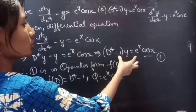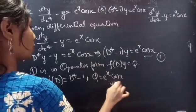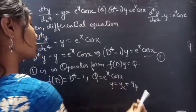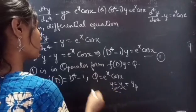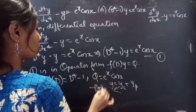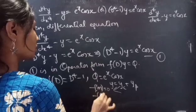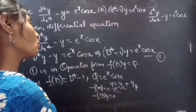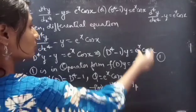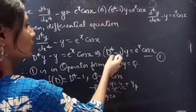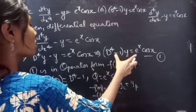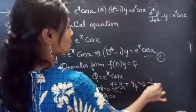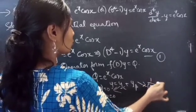This is equation 1 in operator form: f(D)·y = Q, where f(D) = D⁴ − 1 and Q = e^x cos x. We need to find the general solution given by y = yc + yp, where yc is the complementary function and yp is the particular integral. We find yc using the roots of the auxiliary equation of the homogeneous equation (setting RHS to 0), and yp using 1/f(D) · Q.